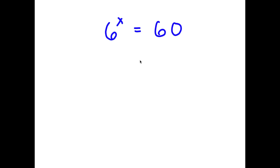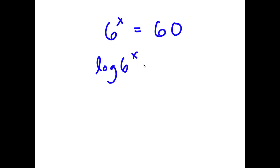In this problem, I have 6 to the power of x is equal to 60. I'm going to first start by taking the log on both sides. So I have log 6 to the power of x is equal to log 60.